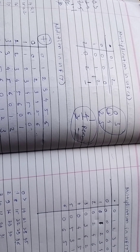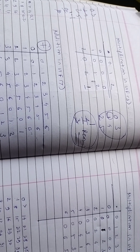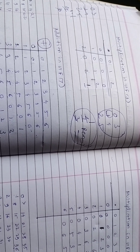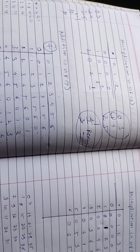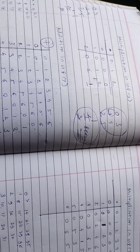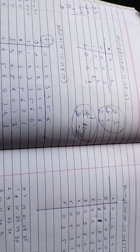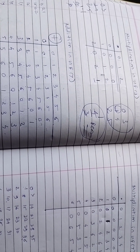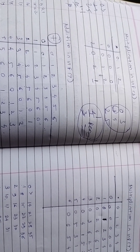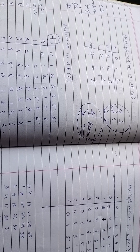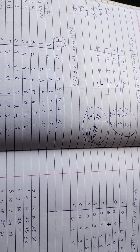In this video we have seen two methods for finding addition and multiplication table elements for three Galois fields: GF(2), GF(3), and GF(7). I hope you now have clarity about handling elements that exceed the Galois field range. Thank you for watching — if you like this video, please subscribe to the channel for more such videos.